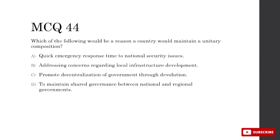What would be a reason a country maintains a unitary composition, where power is concentrated in the federal government? A — quick emergency response time to national security issues: national security involves the whole country, so the federal government gets involved. B — addressing local infrastructure concerns: local infrastructure is handled by local governments in federal systems. C — promoting decentralization through devolution: that contradicts unitary government. D — maintaining shared governance between national and regional governments: that's the definition of federalism. So A is correct.